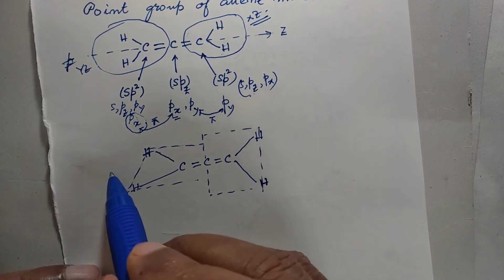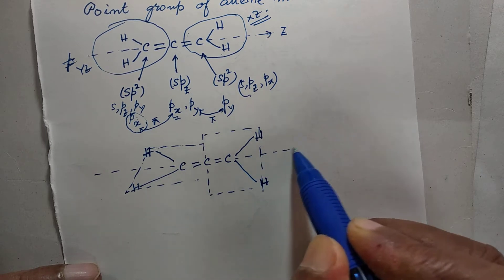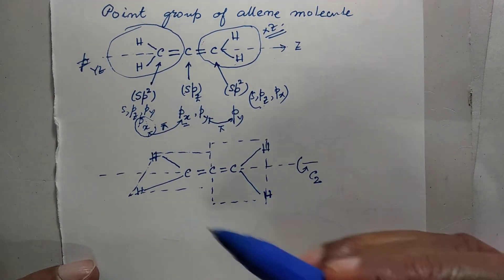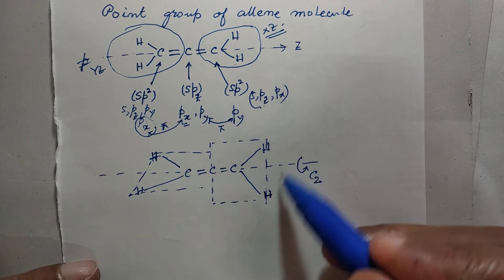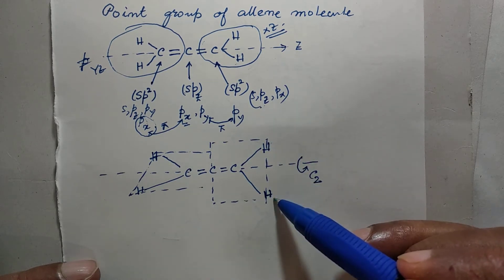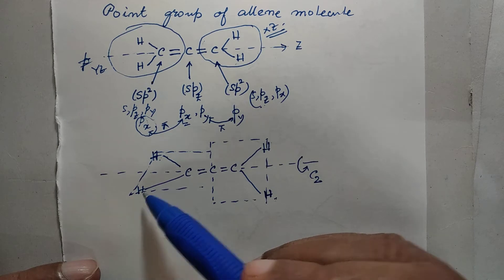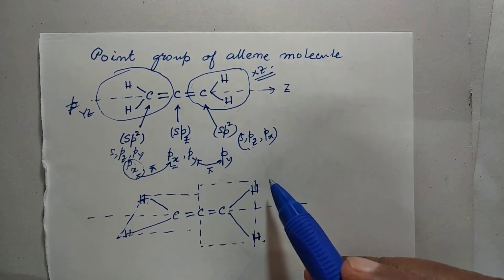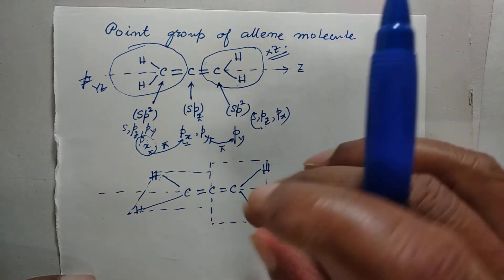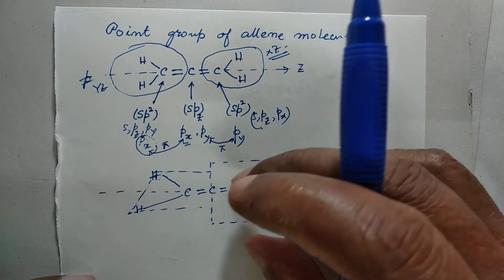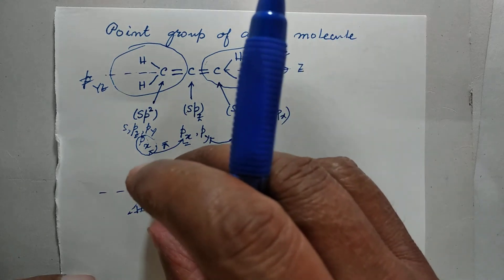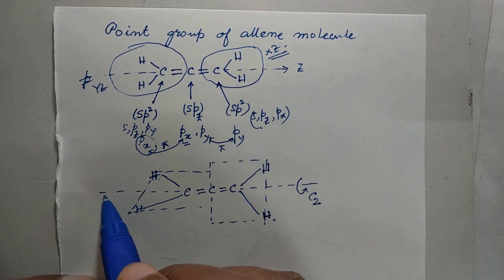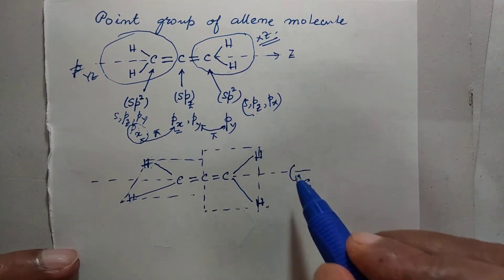We clearly see that this CCC line is a two-fold axis of symmetry. Because if we rotate the whole molecule about this axis by an angle of 180 degrees, these two hydrogen atoms will exchange places, and these two hydrogen atoms will exchange places. The xz plane will remain the xz plane — it will return to its original position. Similarly, the other plane also will come to its original position, although the two atoms exchange places. Therefore, this C2 is an axis of symmetry.